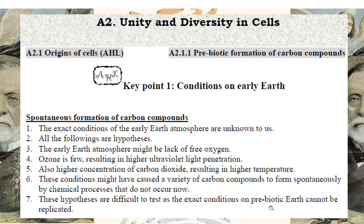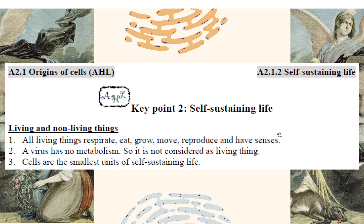This is a prebiotic Earth — it is still unknown to us. After talking about chemical compounds or carbon compounds, we talk about self-sustaining life. What is important about self-sustaining life? First of all, we have to think about what life is. Remember, the famous question — what is a non-living thing? We have to distinguish between living and non-living things.